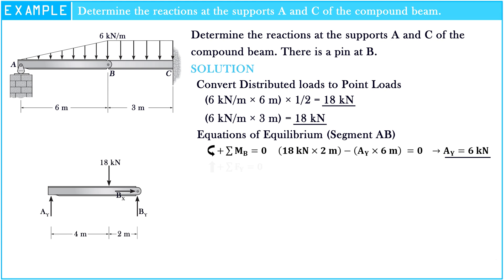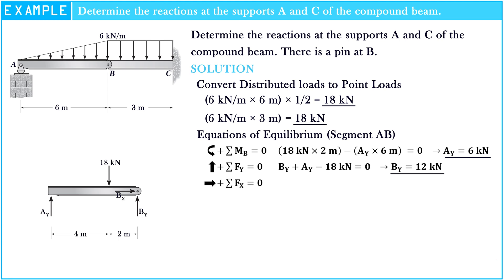The sum of forces along the Y-axis equals 0: BY plus AY minus 18 kN equals 0. Hence, BY equals 12 kN. The sum of forces along the X-axis equals 0. Hence, BX equals 0.